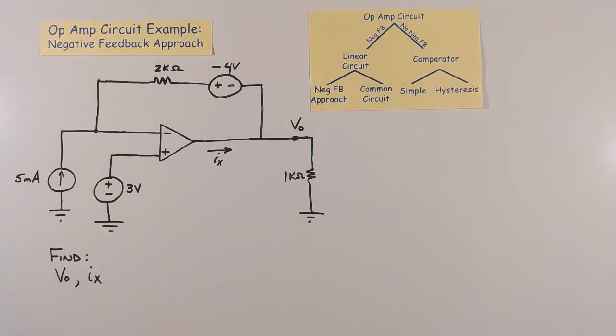This circuit does have negative feedback because there is a connection from the output of the op-amp to the inverting input of the op-amp through the negative 4 volt voltage source and the 2k ohm resistor.